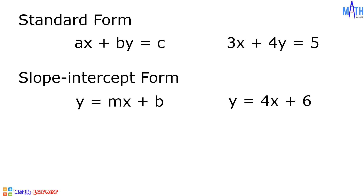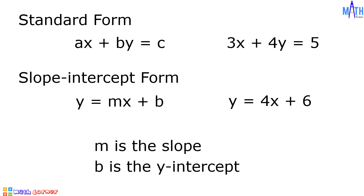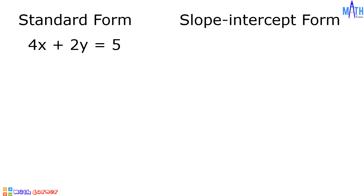In the slope-intercept form, M is the slope and B is the intercept or Y-intercept. Let us begin converting equations in standard form into slope-intercept form. Example number 1: let us convert 4x plus 2y is equal to 5 into slope-intercept form Y equals Mx plus B.